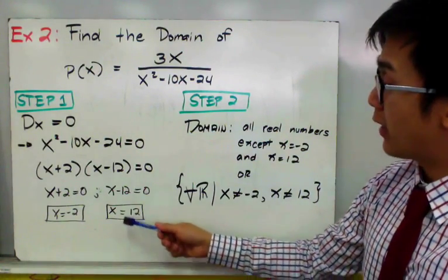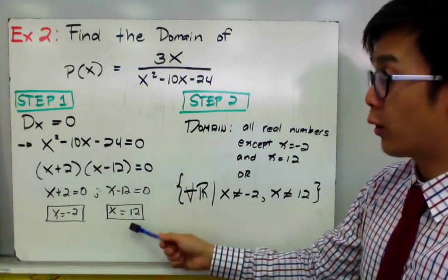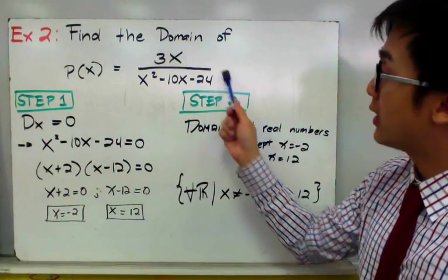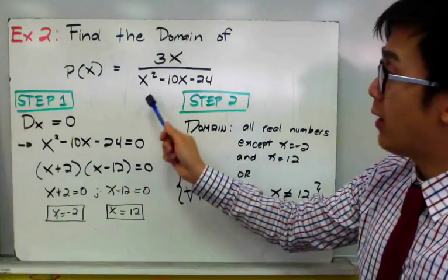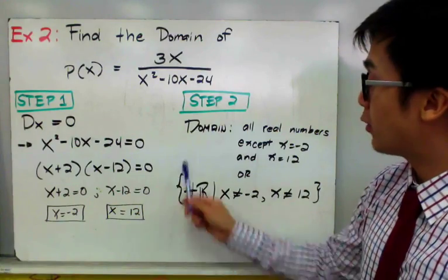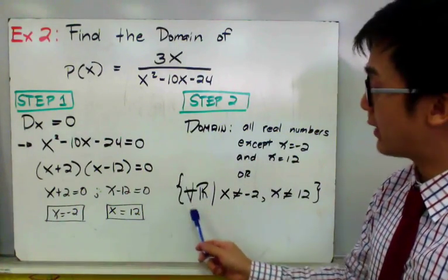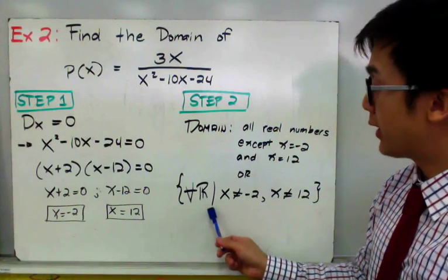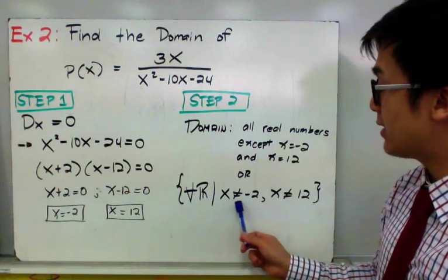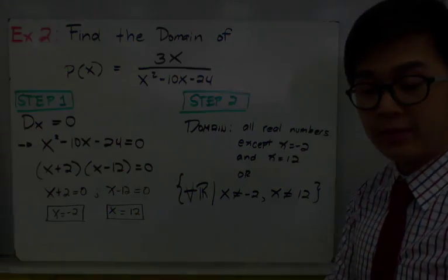The reason is that if we plug in negative 2 or 12 into the quadratic denominator, the denominator will turn into 0, making our function undefined. Therefore, if you want to write the domain in mathematical symbol form, you write it as: for all real numbers such that x is not equal to negative 2 and x is not equal to 12. That is how we find the domain of a rational function.